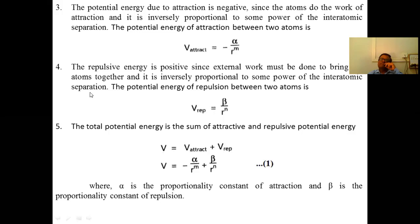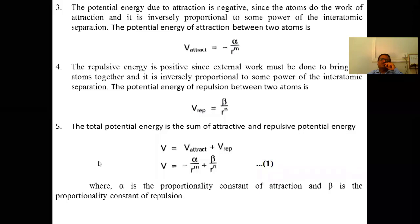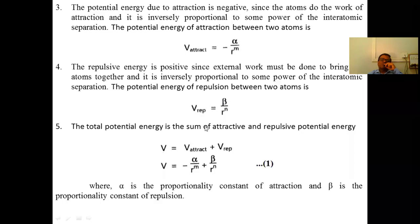The repulsive potential energy is positive since external work must be done to bring atoms together. It is inversely proportional to the distance between them: V_repulsion = +β / R^n, where β is the proportionality constant of repulsion. The total potential energy is V = V_attractive + V_repulsion, which gives V = −α/R^m + β/R^n. This is equation number one.